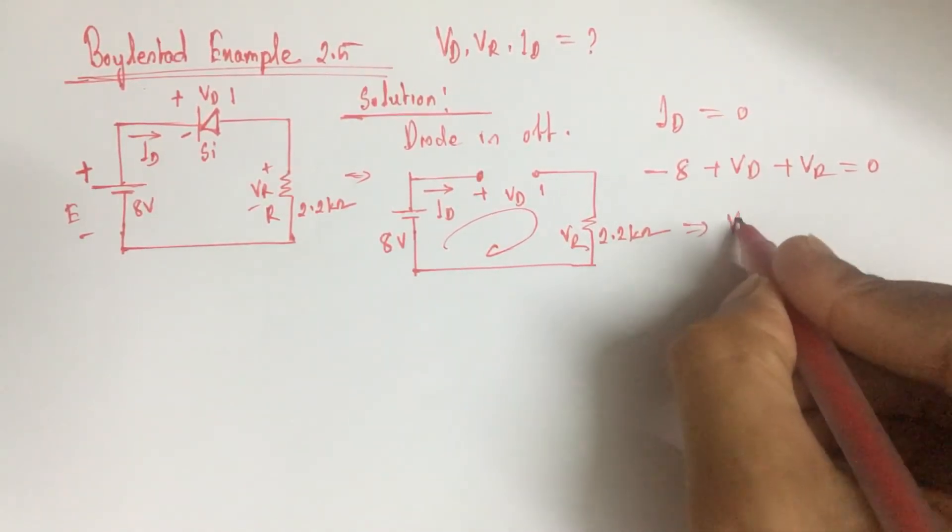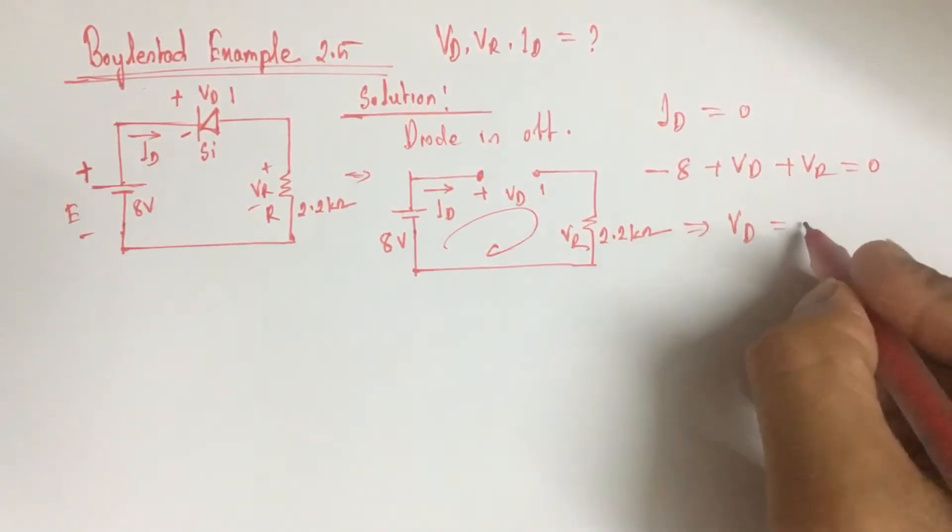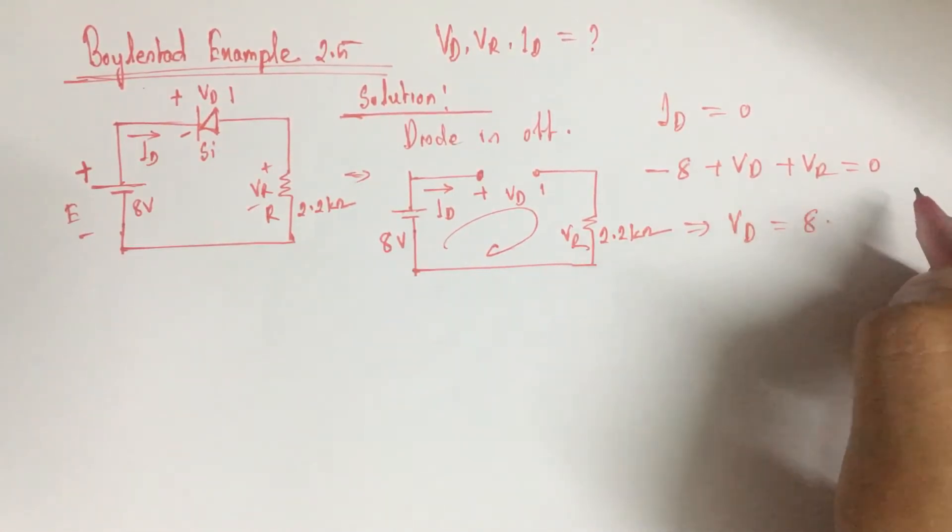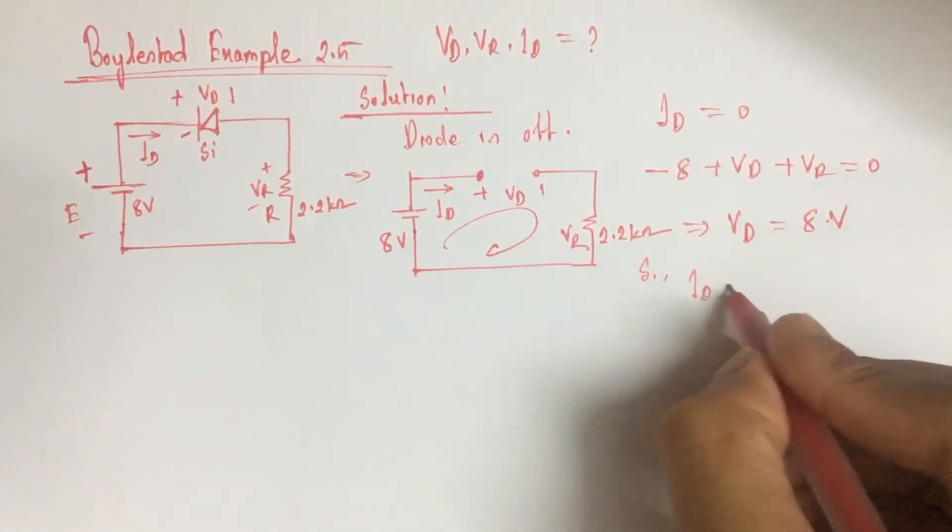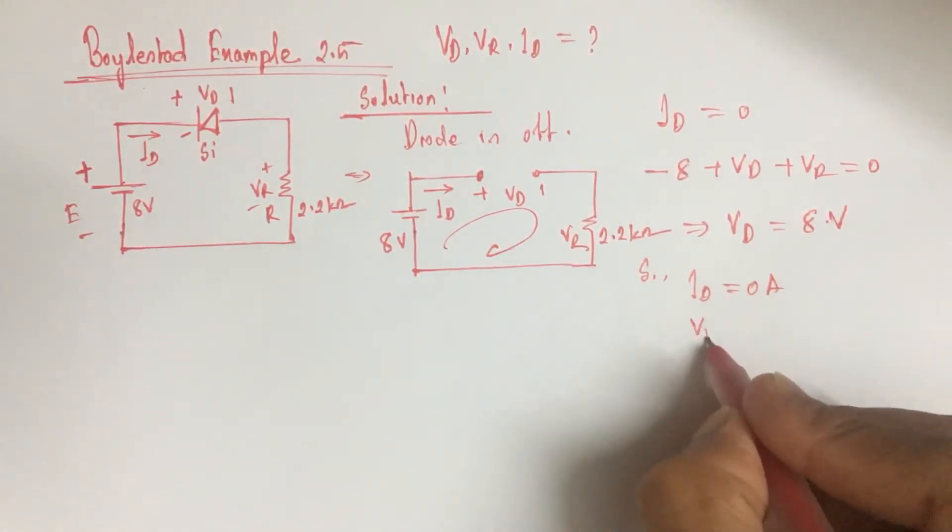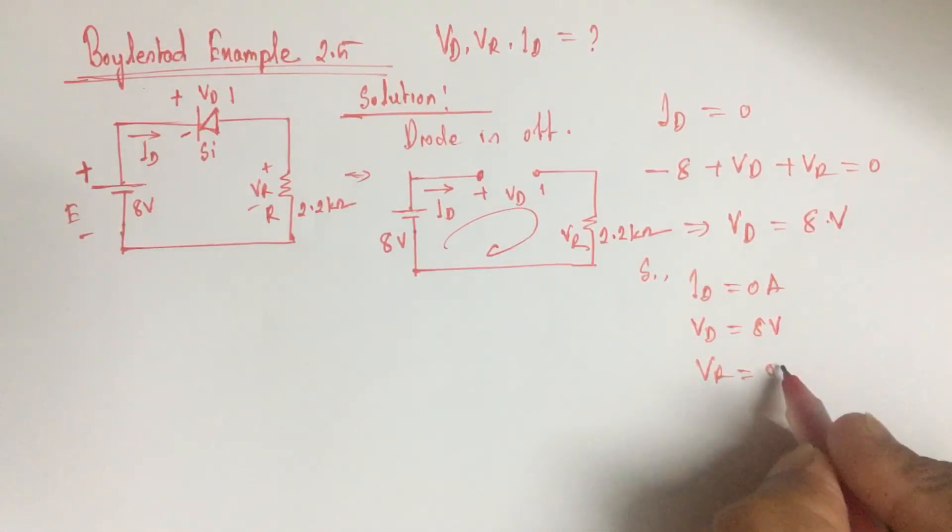Now VD is equal to 8 volt. So ID is equal to 0 ampere, VD is equal to 8 volt, and VR is equal to 0 volt. This is the answer.